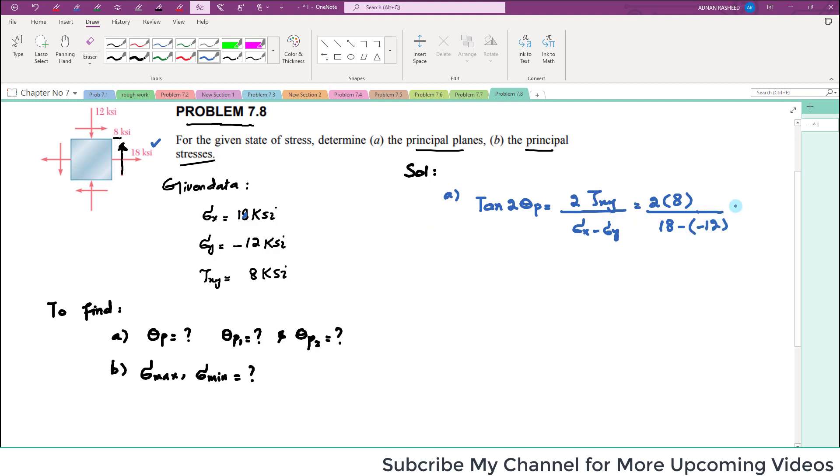minus minus 12. This will be equal to 16 divided by 18 plus 12. So tan(2*theta_p) equals 16 divided by 30, which is equal to 0.533.